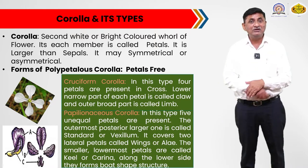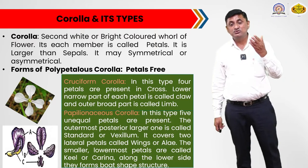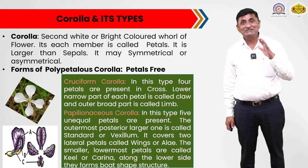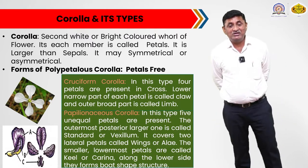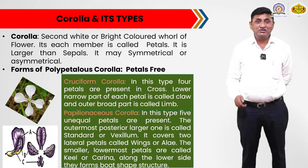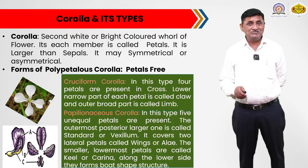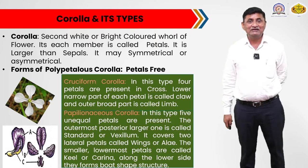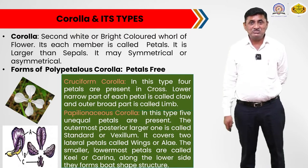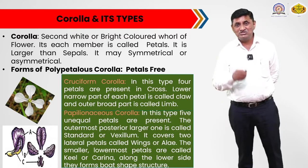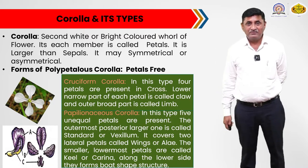These are the two forms of polypetalous corolla. In both cruciform corolla and papilionaceous corolla, petals remain free. The example of papilionaceous corolla is a characteristic feature of flowers of family Papilionaceae. Many examples are there — the flower of pea, flower of Clitoria or Gocarina, and flower of Pelus.